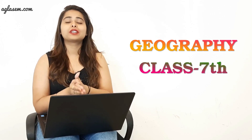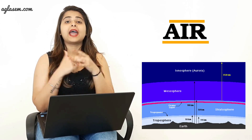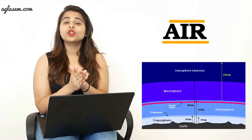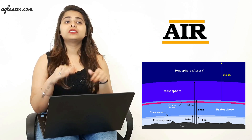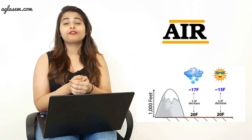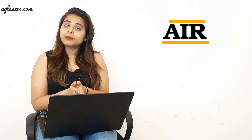Hello, welcome to our channel. Today we are doing Geography Class 7, Chapter: Air. You will learn about the different layers of atmosphere and the composition of the atmosphere. Further, the chapter introduces the working of weather and climate with specific reference to temperature, air pressure, different types of wind, moisture, and rainfall.